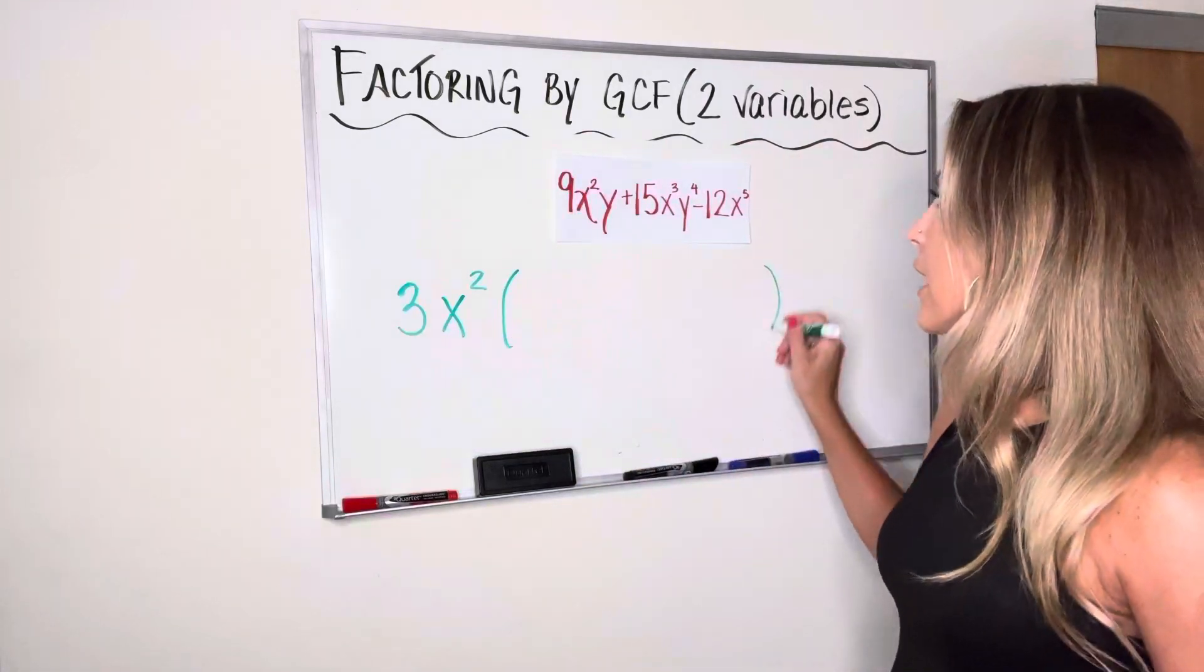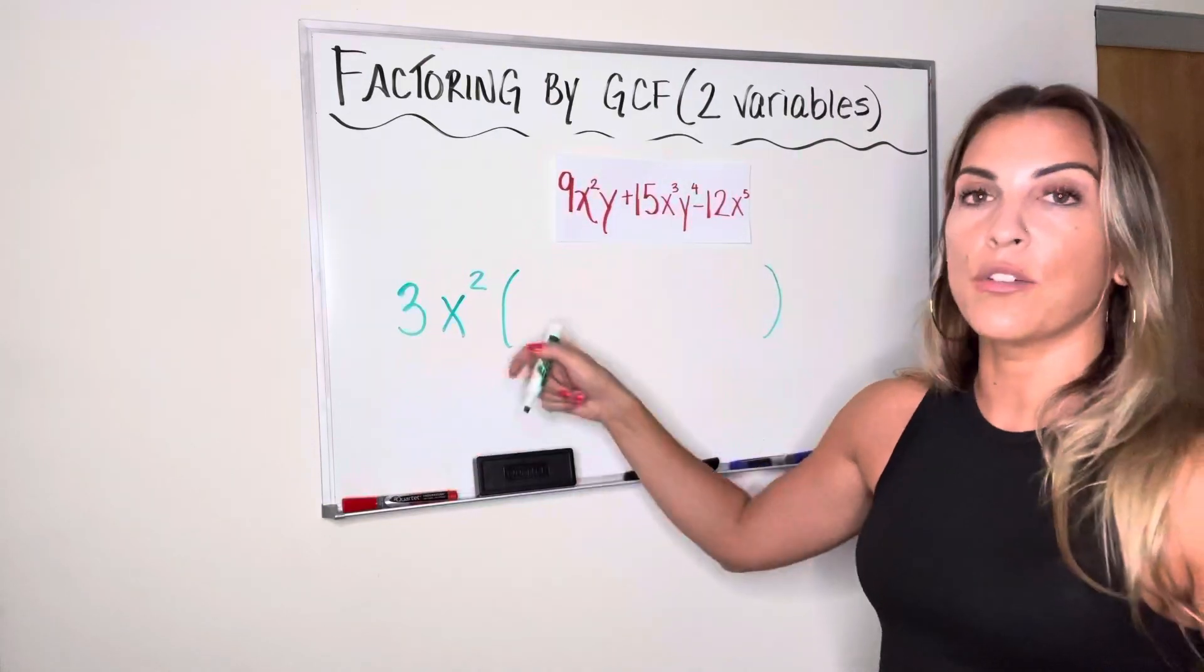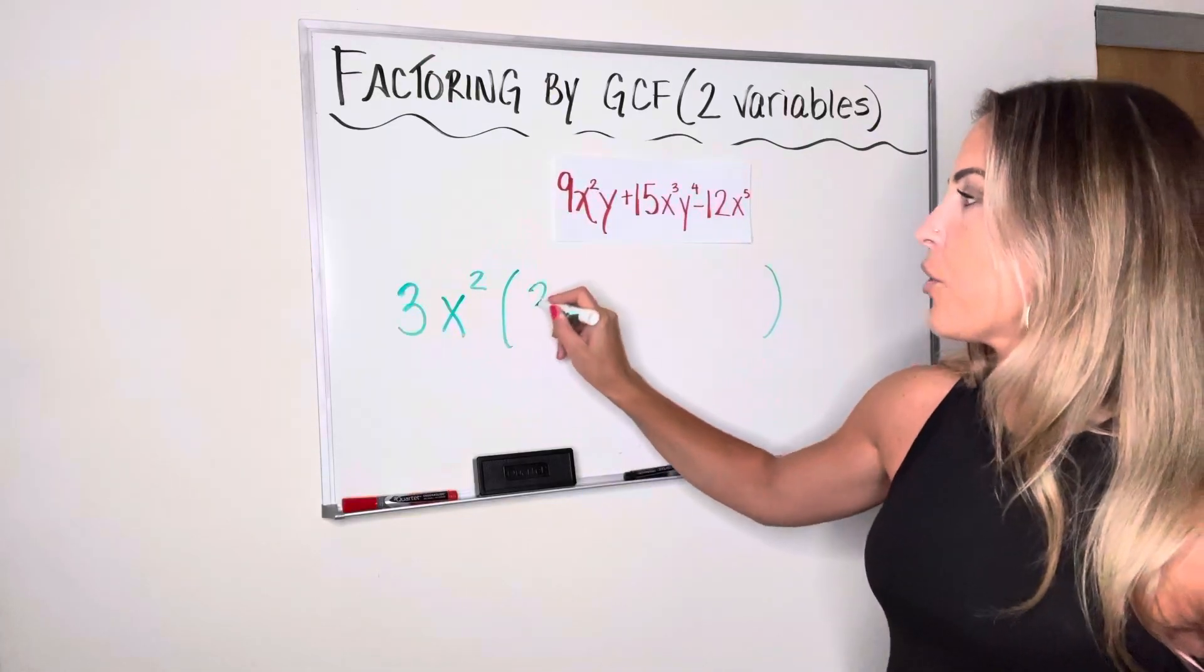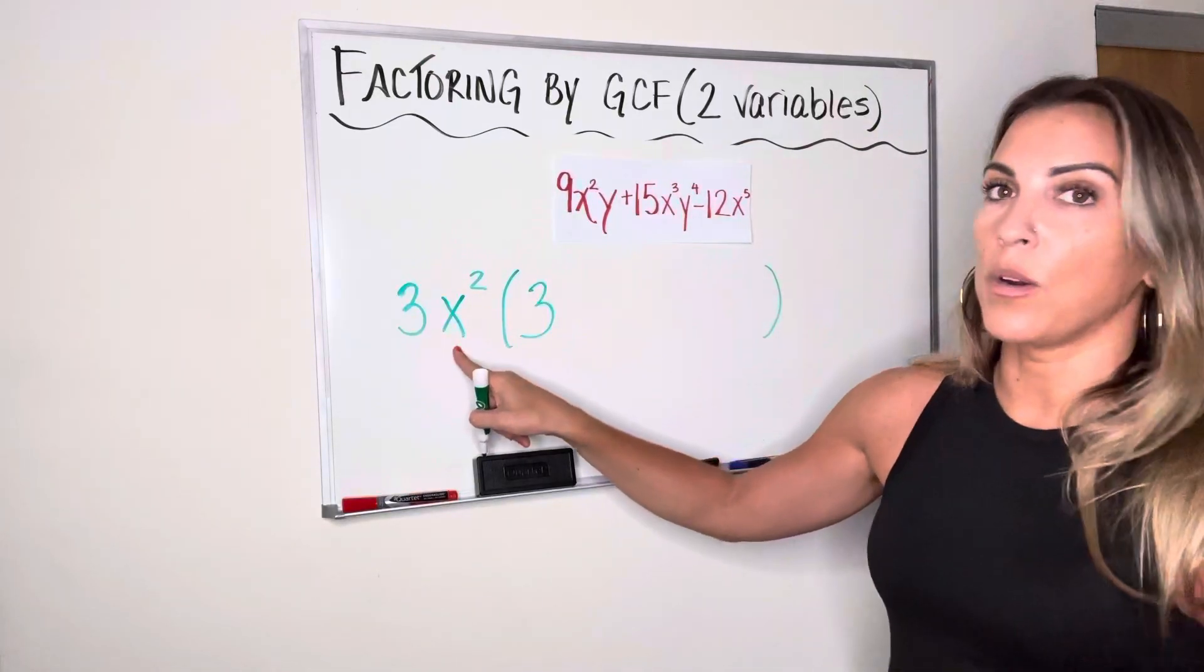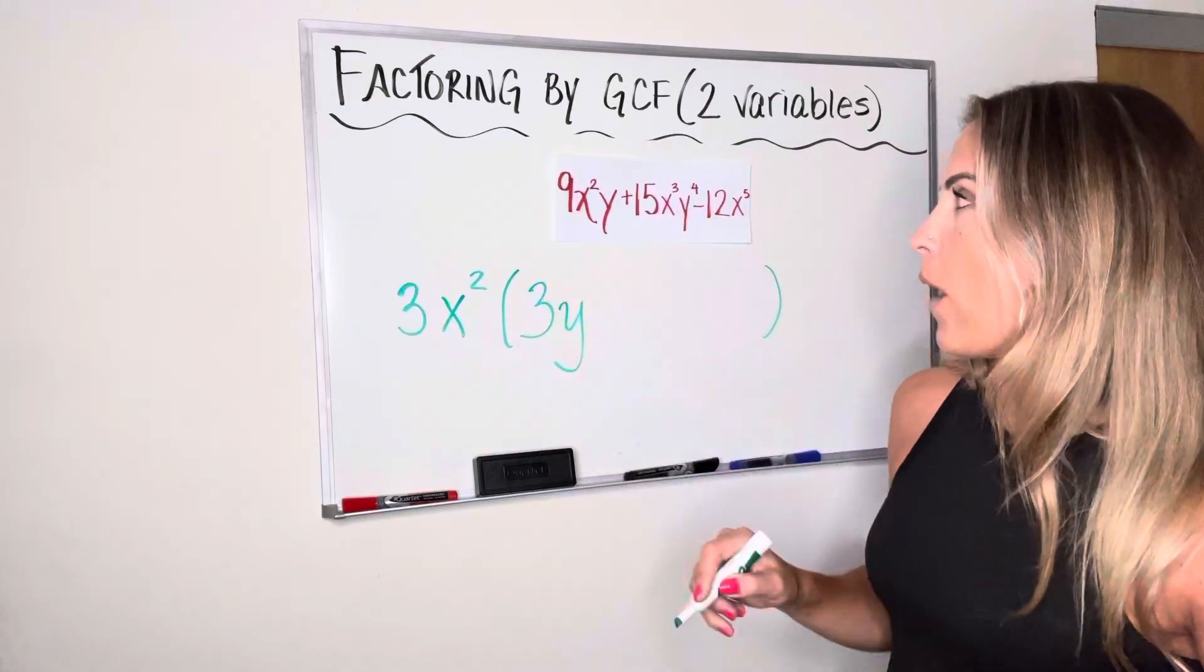I'm going to open those parentheses and start dividing each term by the GCF to find out what goes inside. So 9 divided by 3 is 3. x squared divided by x squared is 1. For y, there's no y's out here, so I need another y inside.